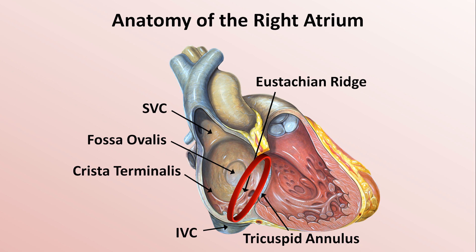When talking about atrial flutter, the single most important part of the right atrium is the cava tricuspid isthmus, often abbreviated as CTI or referred to as just the isthmus. This region is bounded anteriorly by the tricuspid annulus and posteriorly by the eustachian ridge and the IVC. In some patients, electrical impulses cross the isthmus unusually slowly, and the combination of slowed conduction and naturally occurring anatomic barriers create the perfect substrate for a reentrant circuit.